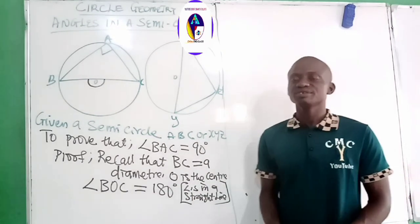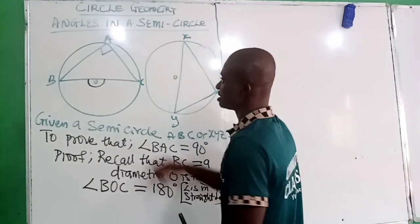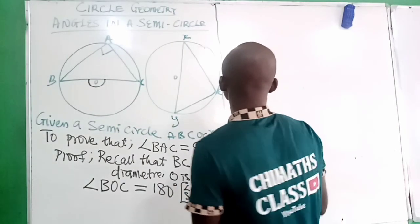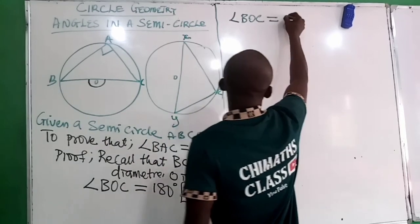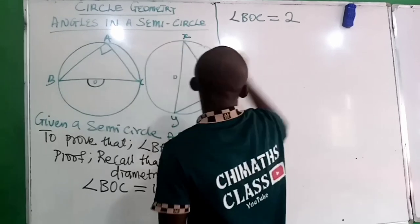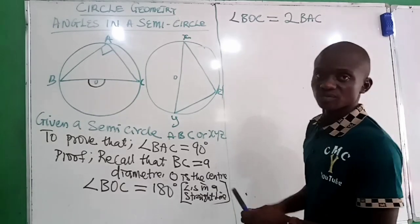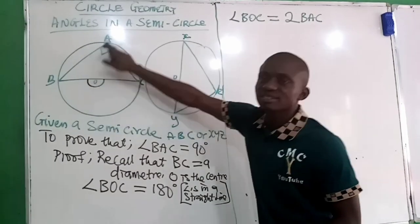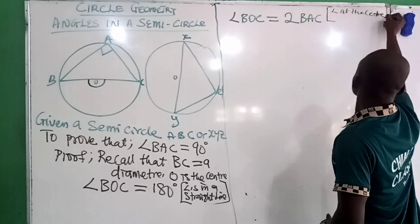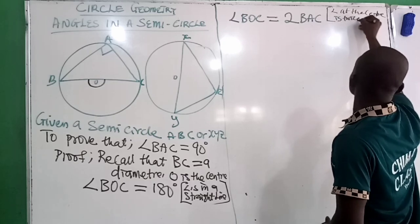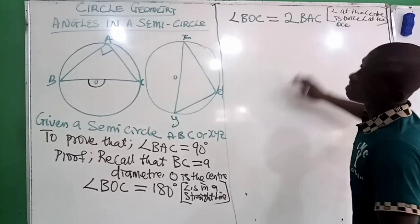Also, remember from the first theorem of circle geometry: the angle at the center is twice the angle at the circumference. Therefore, angle BOC is equal to two times angle BAC. The reason is: angle at the center is twice the angle at the circumference.